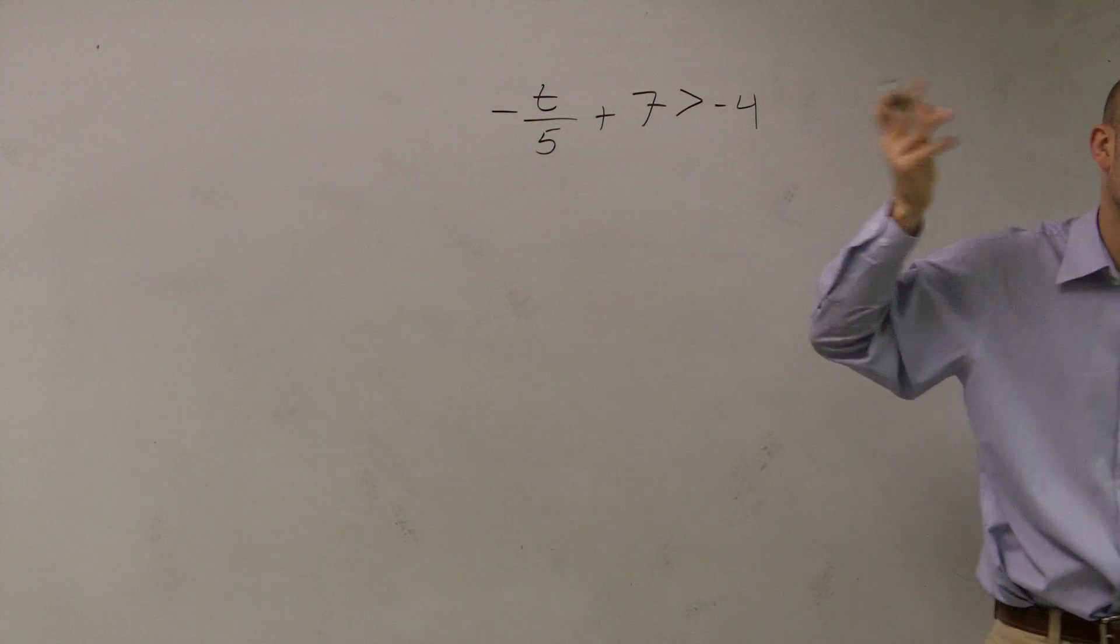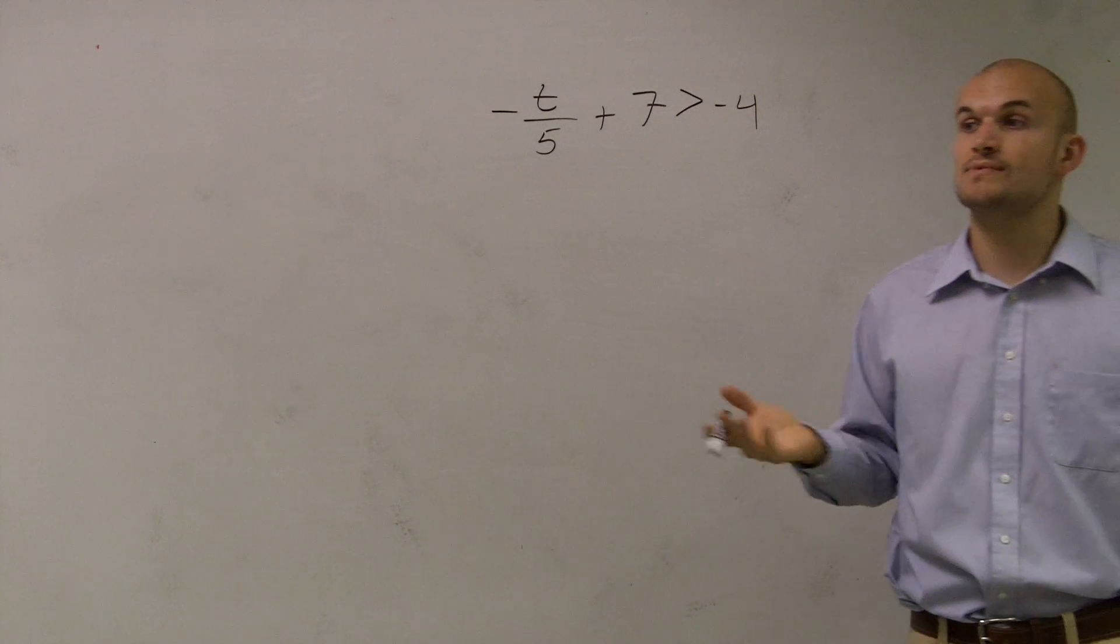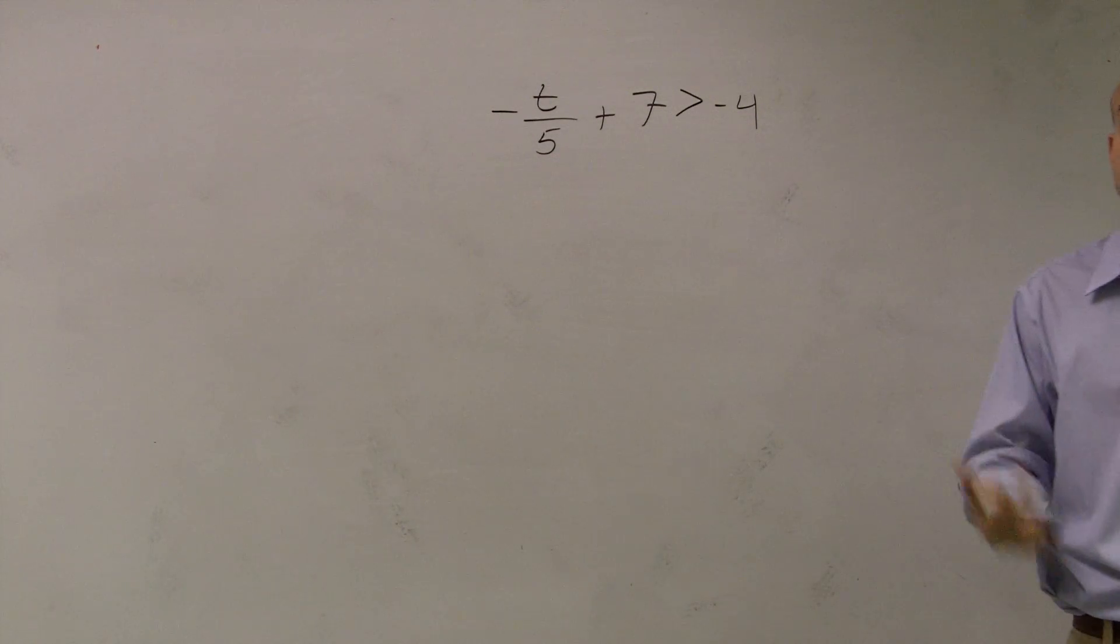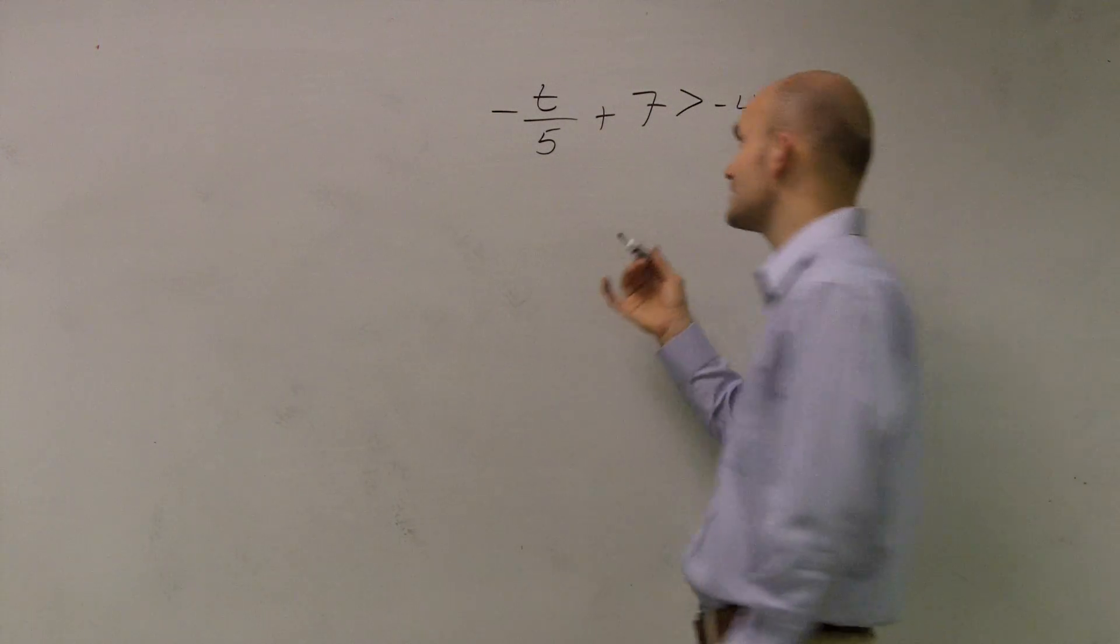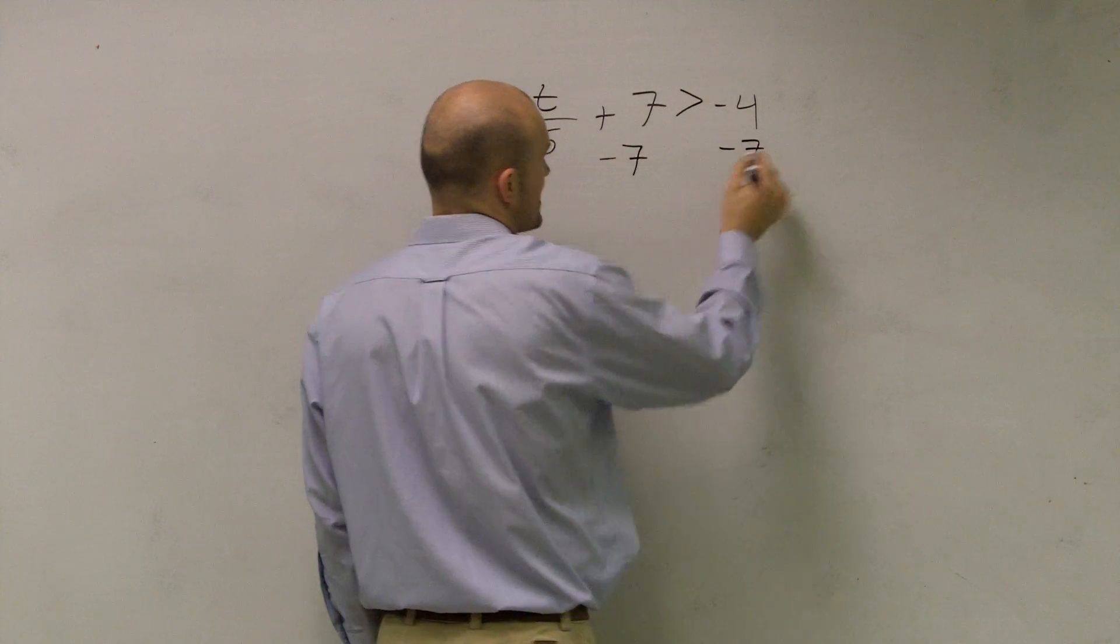So I've said this over and over again. The first thing we always want to do is undo addition and subtraction to your variable. So since a 7 is being added, I need to subtract a 7. So you subtract a 7 on both sides.